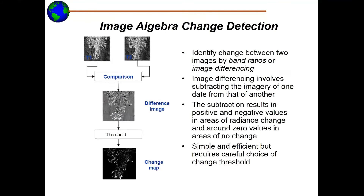First, image algebra change detection. We have two different images — one at time one (the one to the left) and one at time two (the upper right). We make a comparison between the two by simply taking the difference. This gives us a map of how much the values of the satellite image have changed between these points in time. We can then set a certain threshold and decide that above this threshold, there has been a change in the land cover.